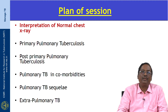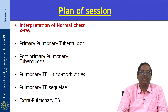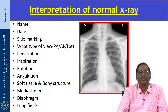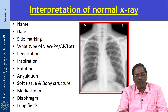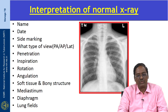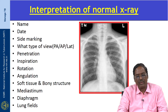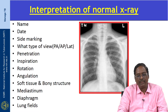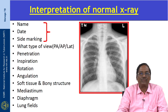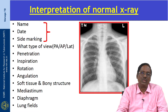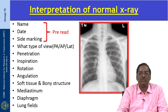We divided the session into the following topics. First, we are going to start with the interpretation of the normal chest X-ray. While interpreting an X-ray, a systematic approach with sound knowledge of chest anatomy and pathology is essential to gain optimal diagnostic information and to avoid potential errors in interpretation. Before reading an X-ray, first we have to check the ownership, age, date, and side marking — this is known as a pre-read.